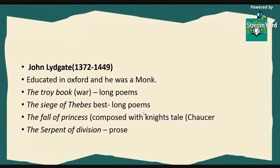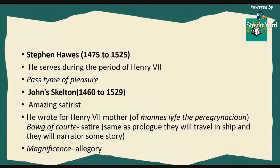Next is John Lydgate, who is very important in the Revival period. He lived from 1372 to 1449. He was educated at Oxford and was a monk. He wrote The Troy Book — a long poem about the Trojan War series — The Siege of Thebes, which is one of his best works, The Fall of Princes, composed with the Knight's Tale in reference to Chaucer, and The Serpent of Division, which is a prose book.